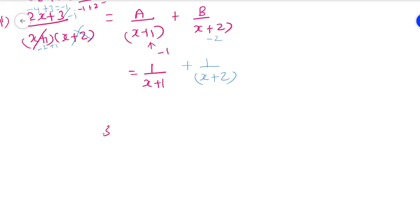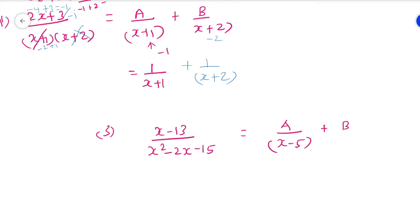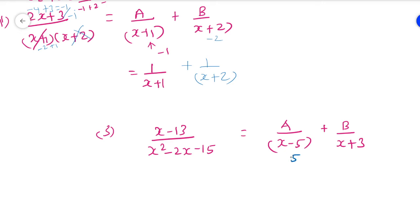Let me do one more problem. Problem 3: (x minus 13) divided by (x² minus 2x minus 15). Factorize the denominator by splitting: the factors are (x minus 5)(x plus 3). So we write A/(x minus 5) plus B/(x plus 3). First simplify: (x minus 13) divided by (x minus 5)(x plus 3).